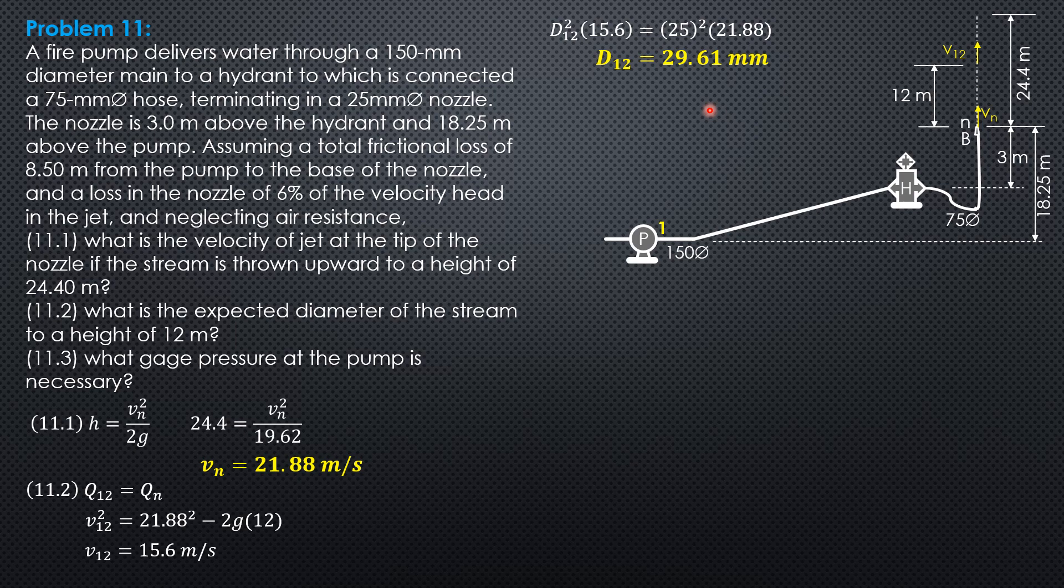Then, for the third, what gauge pressure at the pump is necessary? We write the energy equation between point 1 and point n. We datum through point 1, so elevation is 0 for Z1. We have velocity head at 1, pressure head at 1, elevation head at 1 equals velocity head at n, pressure head at n, elevation head at n, then plus head loss from 1 to n.